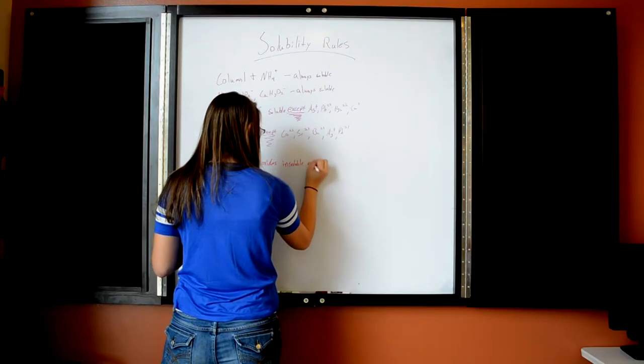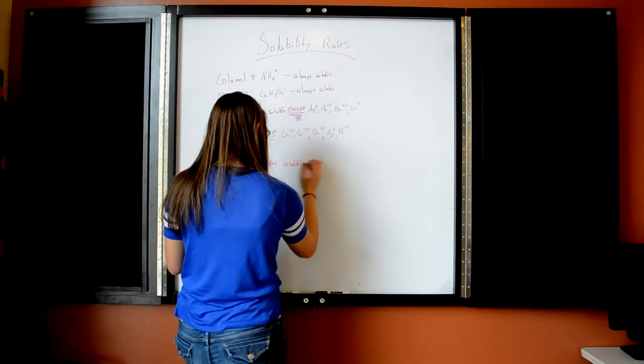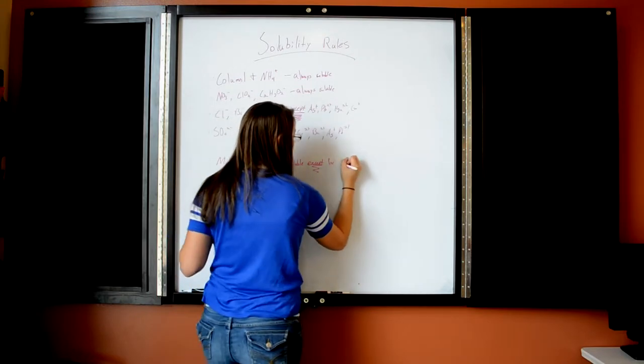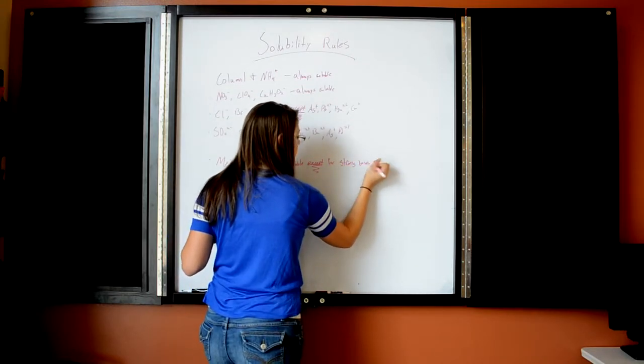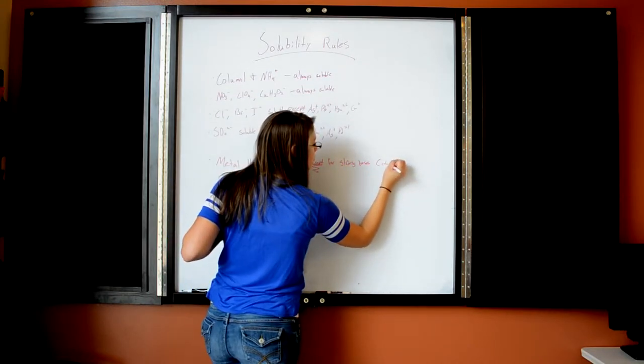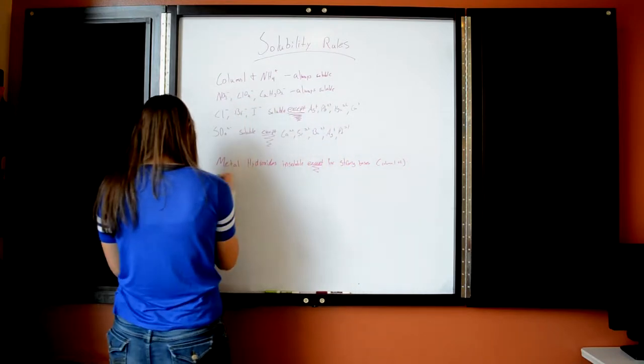So the first two points — column 1 and ammonium, nitrate, perchlorate, and acetate — are always soluble. These are the exceptions to all of the insoluble rules. The insoluble rules are: metal hydroxides are insoluble except for strong bases, which is column 1 and column 2, as we talked about earlier.